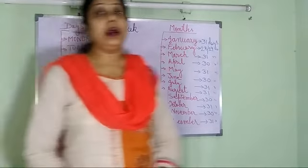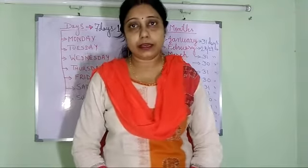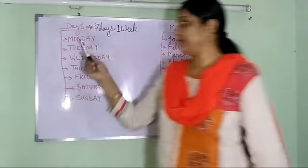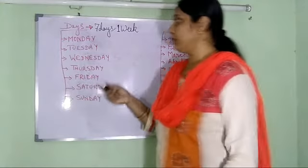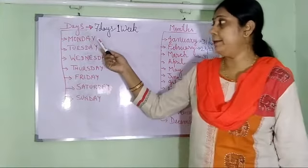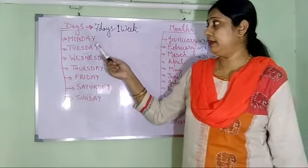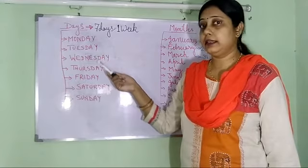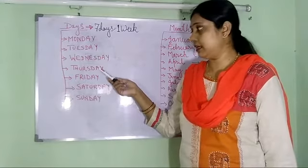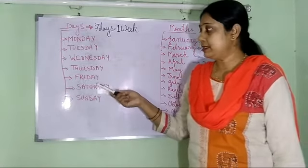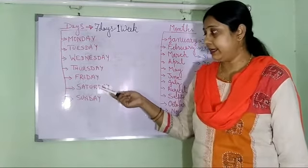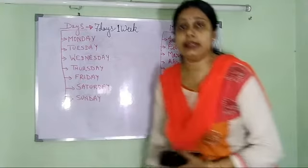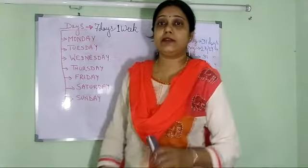How many days are there in a week? There are seven days in a week. What are they? Monday, Tuesday, Wednesday, Thursday, Friday, Saturday and Sunday. What are they? Let us revise again.